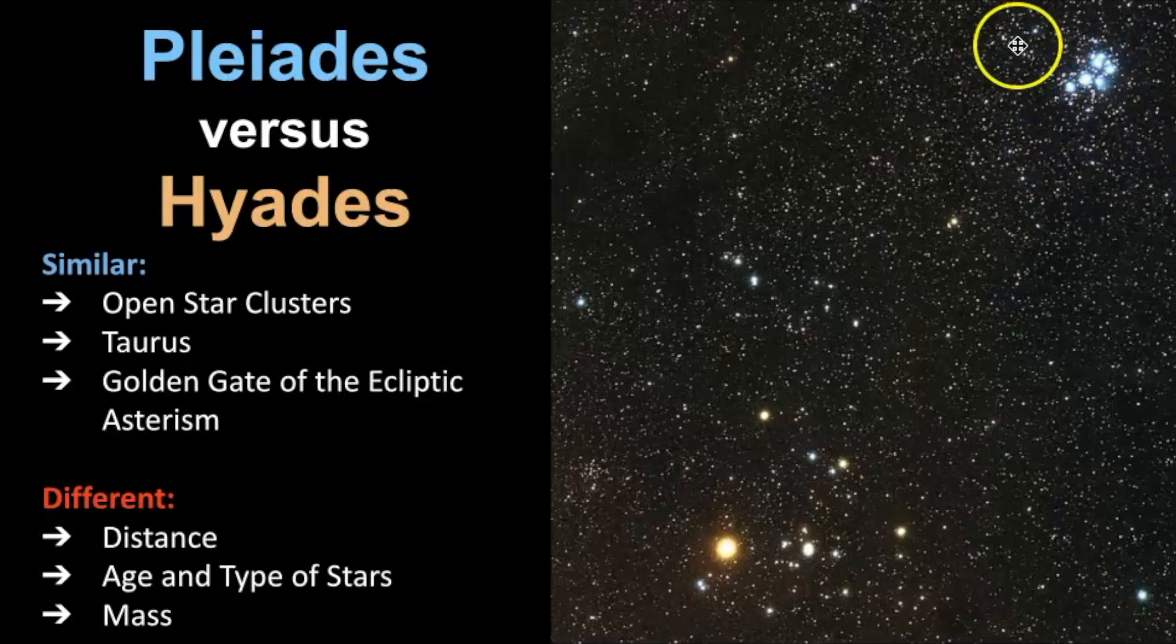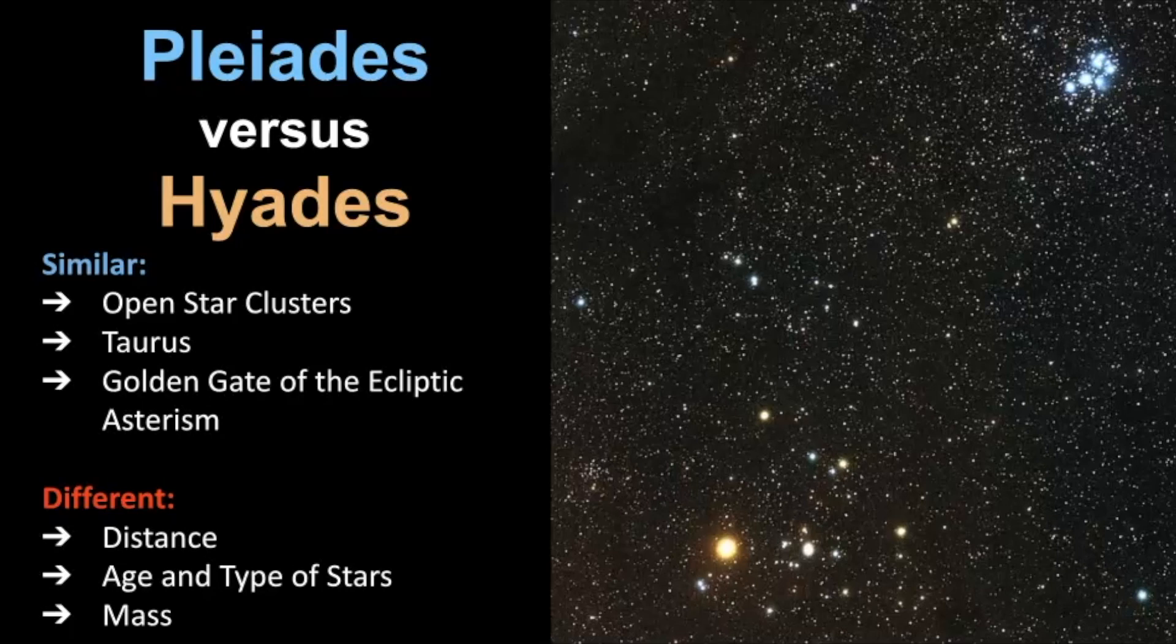The age and type of stars is different. The Pleiades is a younger star cluster that's bound together by gravity while this one is older. Remember Aldebaran, the brightest star in Taurus, is not a part of the Hyades. It looks like it is but it's not. And then their mass is also different. This is twice the amount of mass than the Hyades.